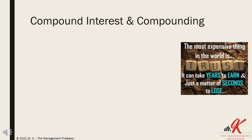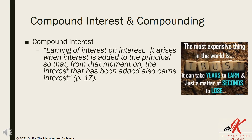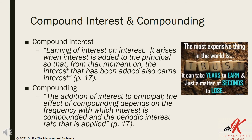Garmin and Forge define compound interest as the earning of interest on interest. It arises when interest is added to the principal, so that from that moment on, the interest that has been added also earns interest. Similarly, they define compounding as the addition of interest to principal. The effect of compounding depends on the frequency in which the interest is compounded and the periodic interest rate that is applied.